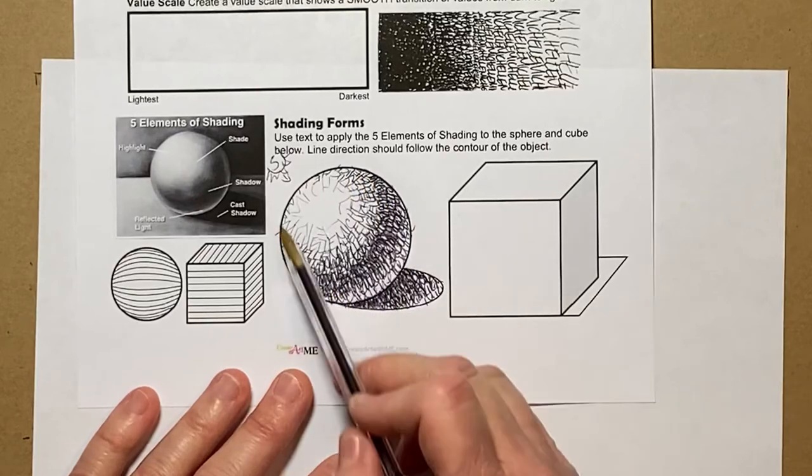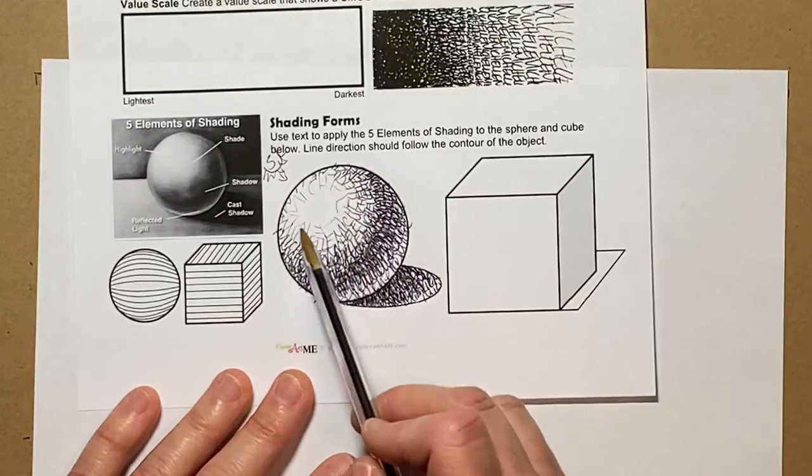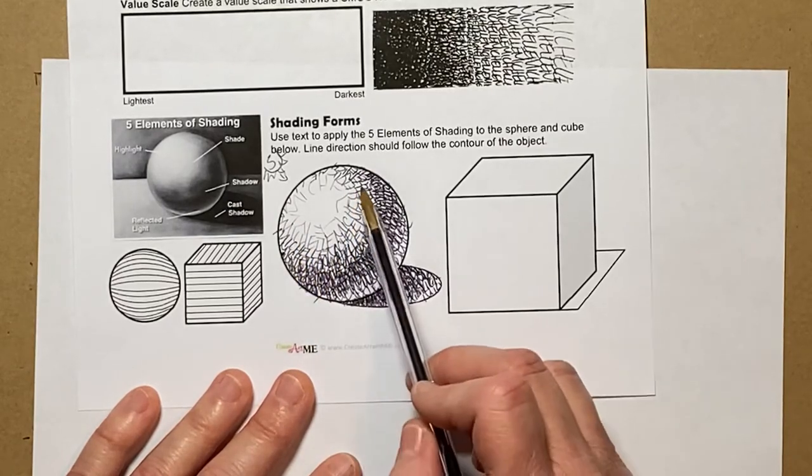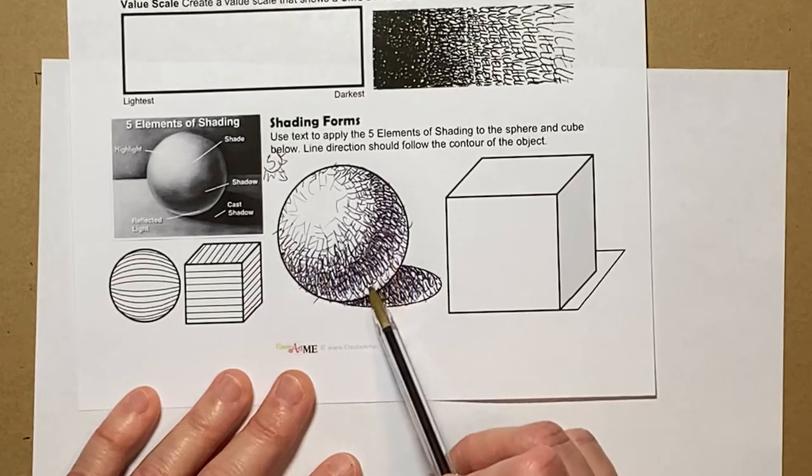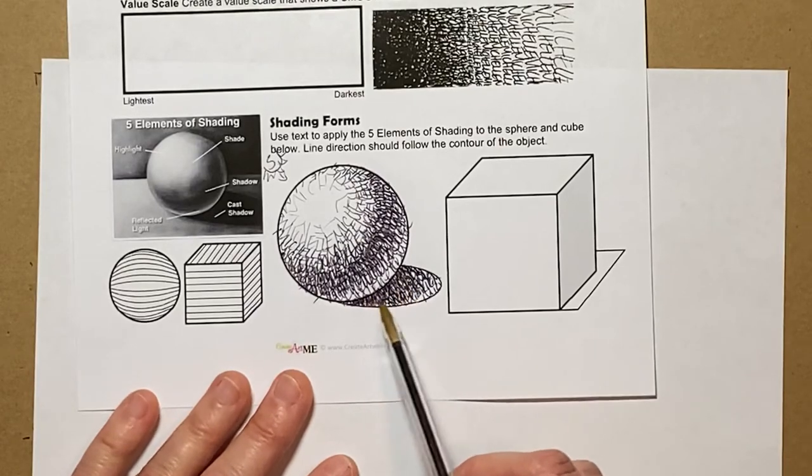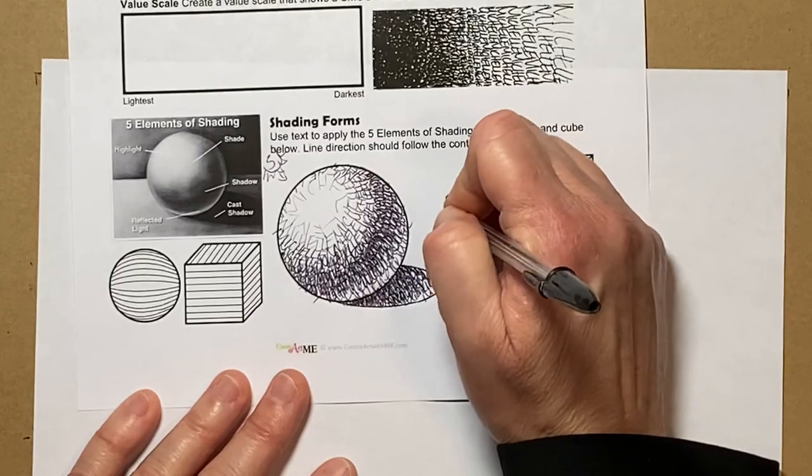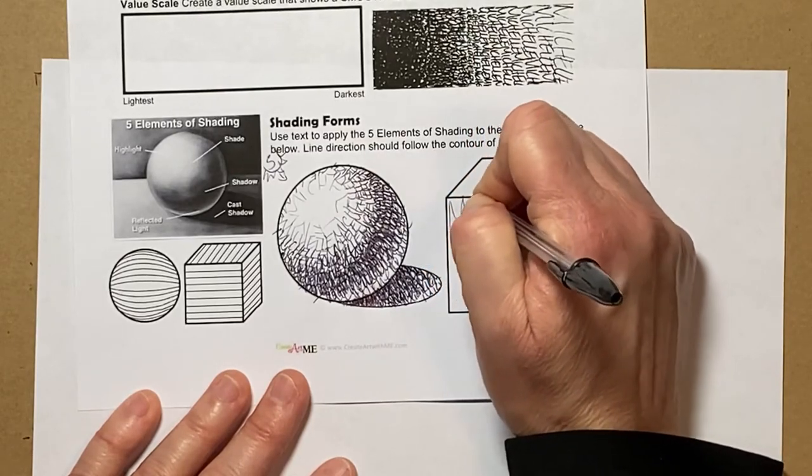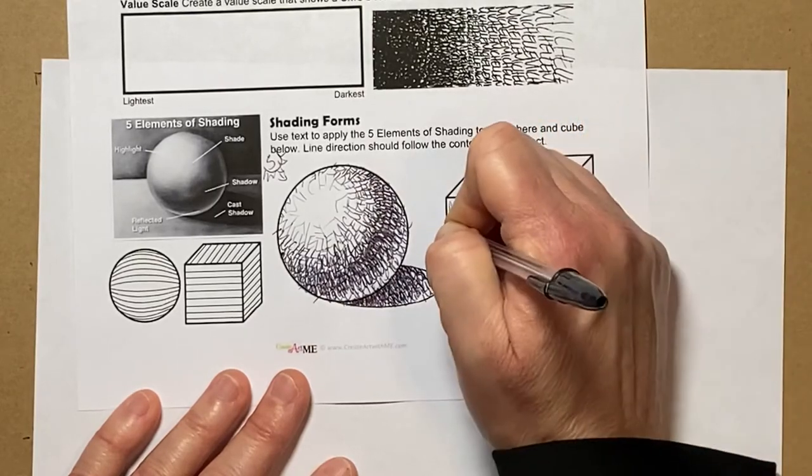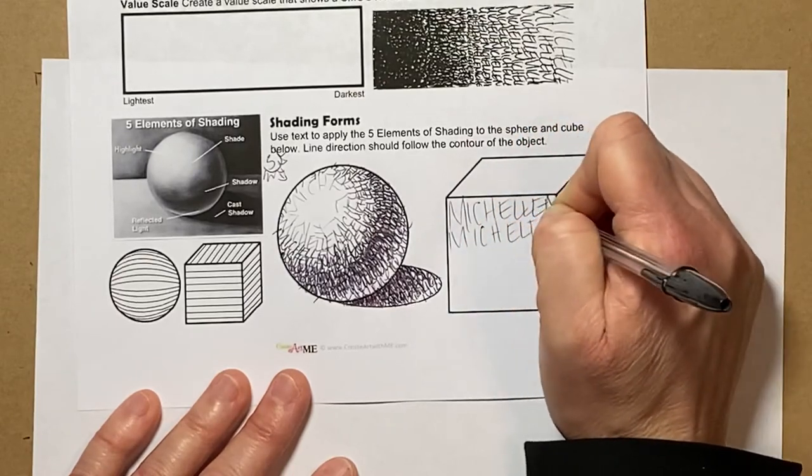Here we've got the five elements of shading. We've got our highlight, we have our shade which is the lighter portion, medium, medium dark, again kind of medium light again, and then our darkest values for the cast shadow down here. These will be easy. I want to keep the front of this pretty light.